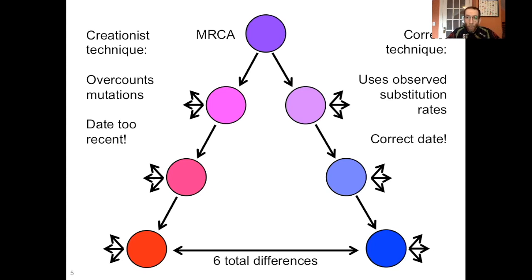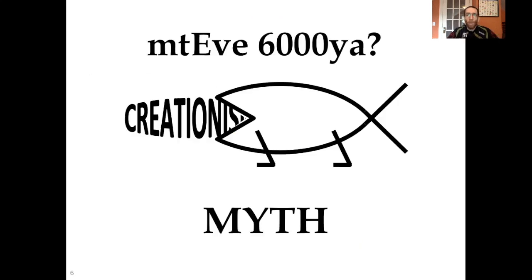When you do the technique that way, you get the correct date, which for mitochondrial Eve is anywhere from 60 to 200,000 years ago. In other words, way outside a young earth timeline. So that's why mitochondrial Eve 6,000 years ago is a myth.